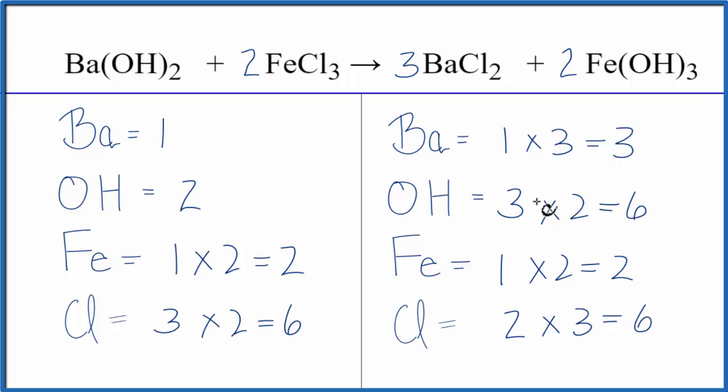And I can see if I put a three as my coefficient in front of the barium hydroxide. One times three. That will give me three bariums. And then two times the one, so I have two hydroxides times the three. That will give me six. And this equation is balanced.